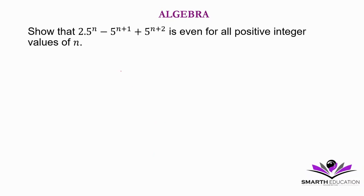Show that 2 times 5 to the power n minus 5 to the power n plus 1 plus 5 to the power n plus 2 is even for all positive integer values of n.